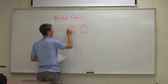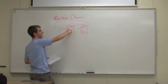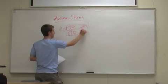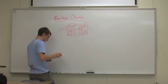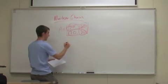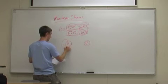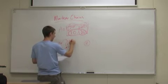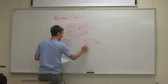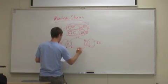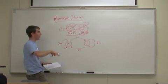Each column represents the probabilities of going to A or staying at A, and going to B or staying at B, and the columns all add up to one. You can also represent this as a transition graph: brand A has a 70% self-loop, 30% going to brand B, brand B has an 80% self-loop, and 20% going to brand A. This is called a transition graph, and the matrix is called a transition matrix.